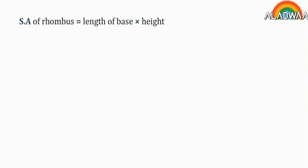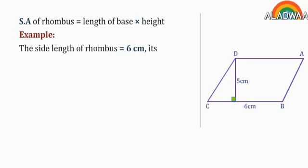Surface area of rhombus equals length of base times height. Example: In the opposite figure, the side length of rhombus equals 6 cm. Its height equals 5 cm. Find its surface area.